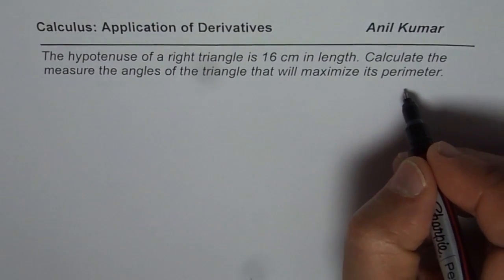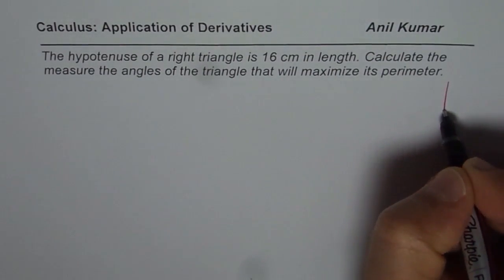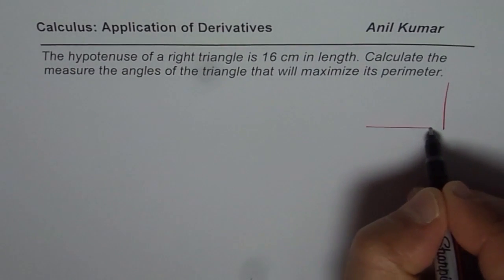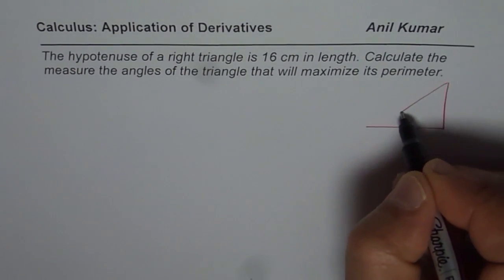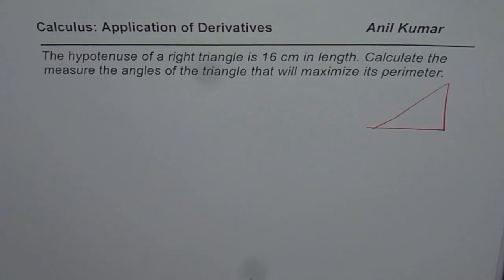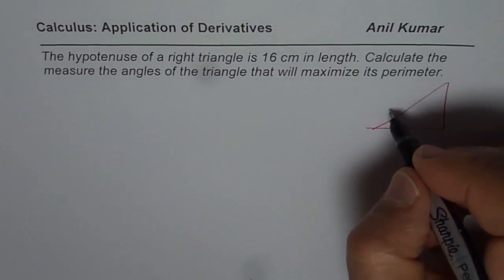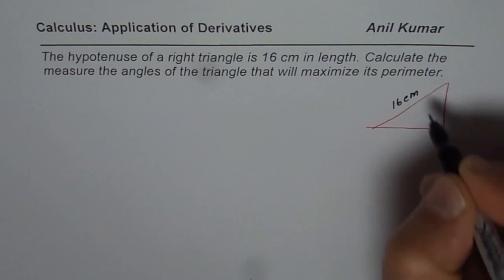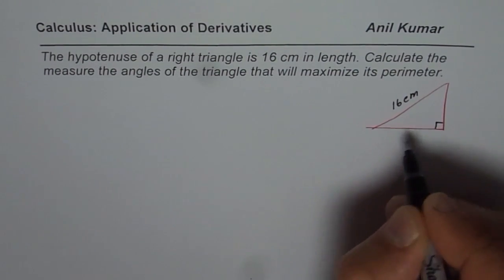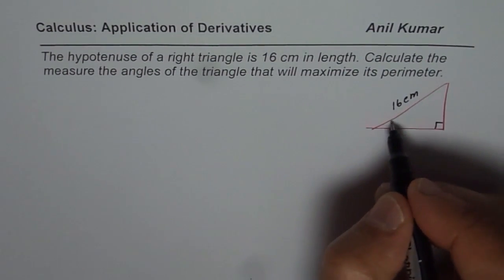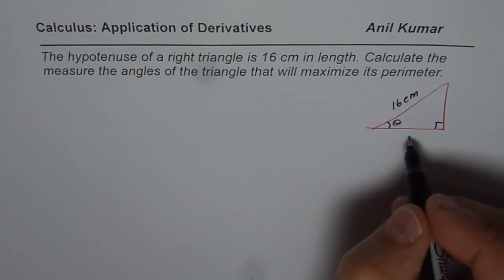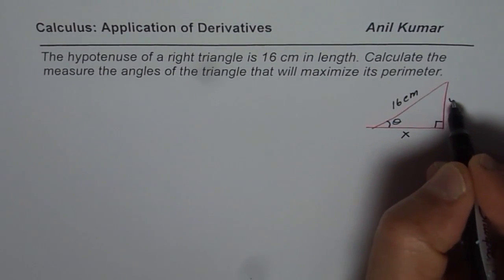Calculate the measure of angles of the triangle that will maximize its perimeter. So, let's sketch one right angle triangle. We have a right angle triangle here. We are given that the hypotenuse is 16 cm. We can say that the other angles are, let us consider one angle theta and the sides be x and y.